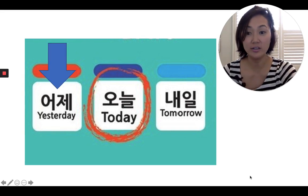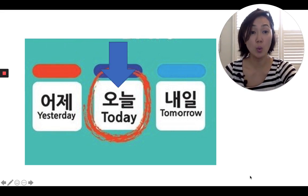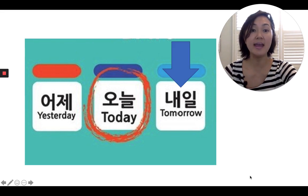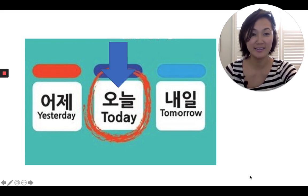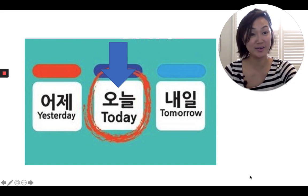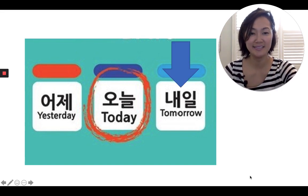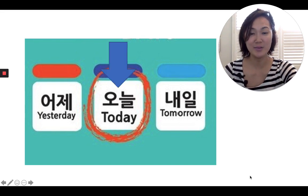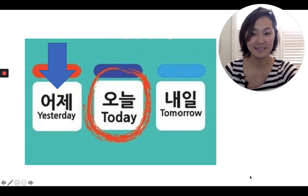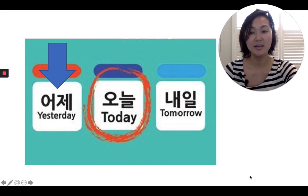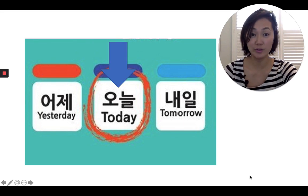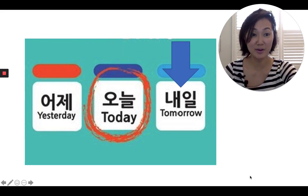Okay, 어제, 오늘, and 내일. One more time — what is this one with the arrow? If you said 오늘, you're correct. What's this one? If you said 내일, you're correct. What is this one? If you said 어제, you're correct. So yesterday is 어제, today is 오늘, and tomorrow is 내일.